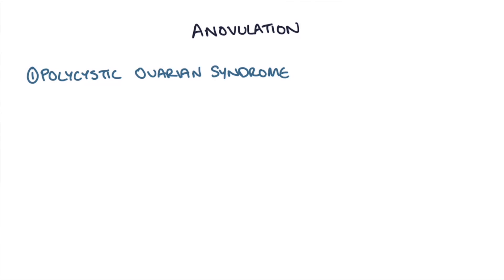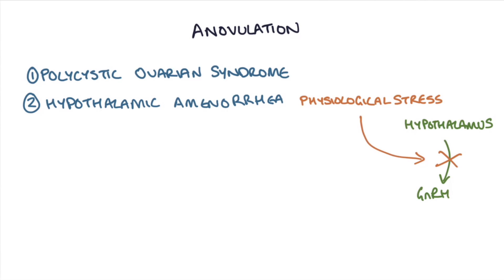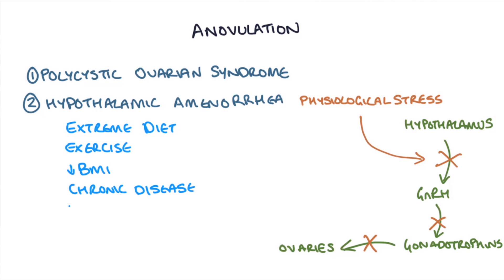Another cause of anovulation is hypothalamic amenorrhea, where physiological stress causes the hypothalamus to stop producing GnRH. Without GnRH, the gonadotrophins that stimulate the ovary to develop and release eggs are not produced. This can happen when the body is under significant stress, such as with extreme diets, excessive exercise, low BMI, chronic disease, or significant psychological or lifestyle stresses.